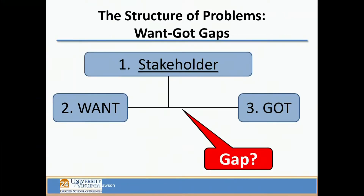We could look at this model and say, a problem is a want-got gap for someone. And if we don't clarify who the someone is, then we're going to get confused about what the problems are.